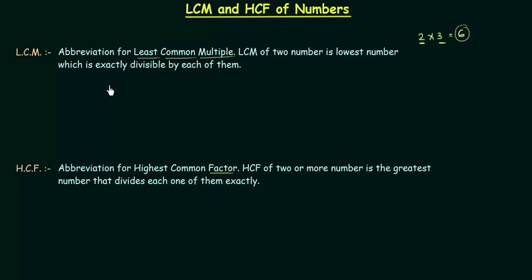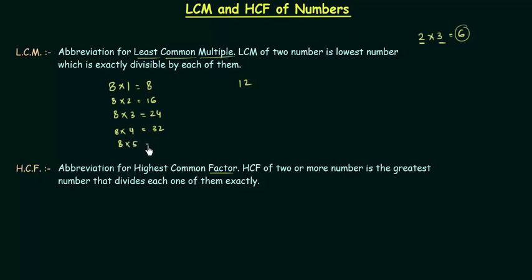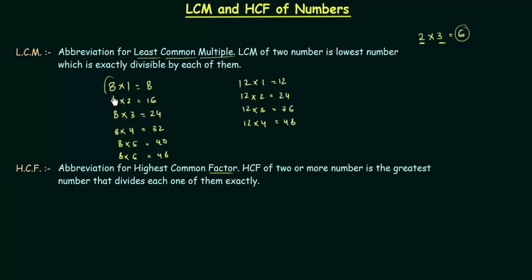If the two numbers are 8 and 12. Multiples of 8: 8 multiplied by 1 is 8, by 2 is 16, by 3 is 24, by 4 is 32, by 5 is 40, and by 6 is 48. Multiples of 12: 12 multiplied by 1 is 12, by 2 is 24, by 3 is 36, by 4 is 48. We want to find LCM of 8 and 12.